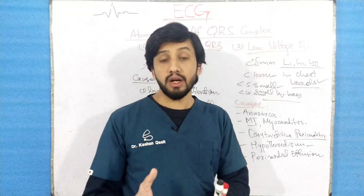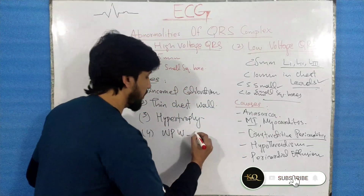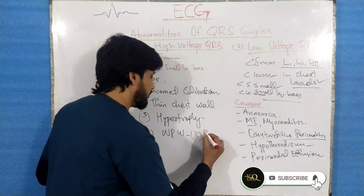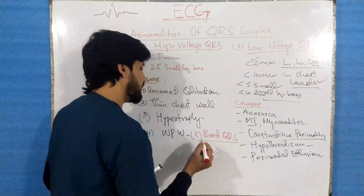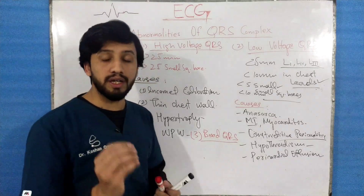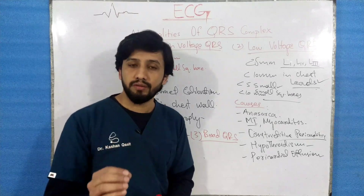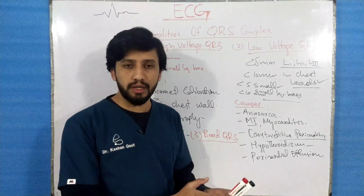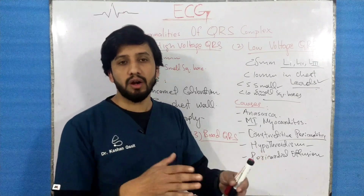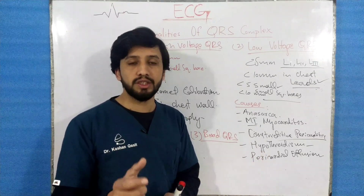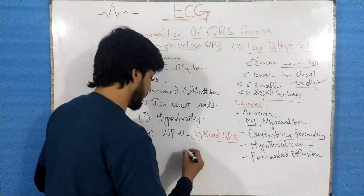Next we are going to discuss the third abnormality, which is a broad QRS complex. This is seen in conditions like left bundle branch block, right bundle branch block, ventricular tachycardia, ventricular fibrillation, and hyperkalemia — in which there will be a broad QRS complex along with tall T waves seen on the ECG paper. These are the conditions in which you will notice the broad QRS complex.